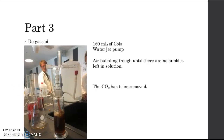In part 3 we did a potentiometric titration of Coca-Cola. Before the titration, we first degassed the Coca-Cola — we took 160 milliliters of Cola and added it to a tube, then used a water jet pump to have air bubbling through it until there were no more bubbles left. The point of this is to remove all of the CO2 from the solution, because CO2 would react with the OH⁻ ions to create an acid, requiring more sodium hydroxide and giving us the combined concentration of phosphoric acid and CO2 rather than phosphoric acid alone.